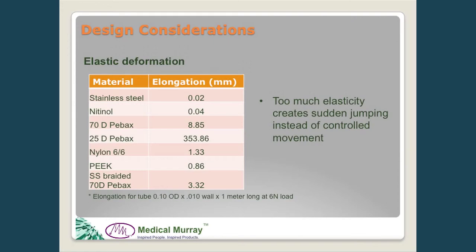Elastic deformation is another consideration — this goes along with some of the loads applied as a result of friction and other factors discussed. Under just moderate loads, some of the common materials we use show pretty significant changes in length. These can result from friction in the device or from the load required to push an implant from the tip to perform the desired function.